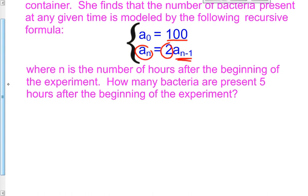N is the number of hours after beginning the experiment, and we need to find how many bacteria are present after 5 hours. So a sub 0 is before the experiment even happens — she has 100 bacteria before any time has passed. After 1 hour, 2 hours, 3 hours, 4 hours, and so on — those are our a sub n's.